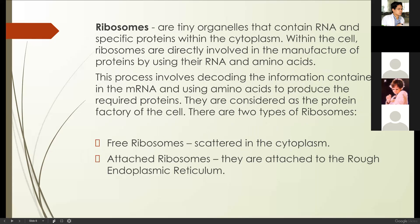Let's move forward. Ribosomes are tiny organelles that contain RNA — ribonucleic acid — and specific proteins within the cytoplasm. Ribosomes are directly involved in the manufacture of proteins using their RNA and amino acids. Remember that ribosomes are considered the protein factory of the cell — they are the ones that create proteins. This process involves decoding the information contained in the mRNA — messenger ribonucleic acid — and using amino acids to produce the required proteins.